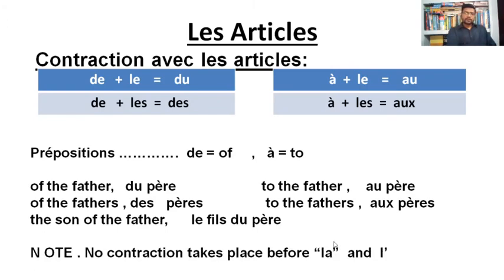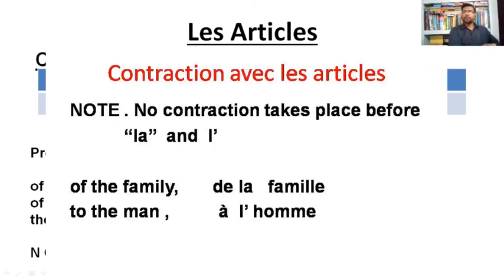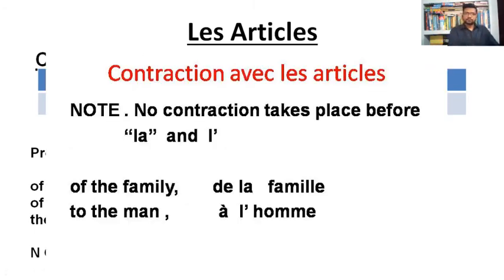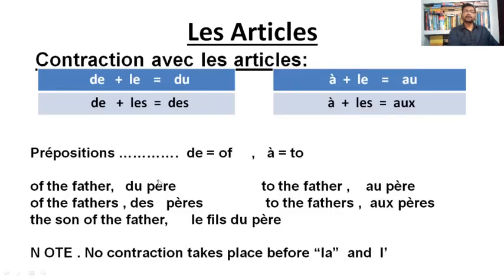Once again — no contraction takes place before 'la' and 'le' when an apostrophe is used. If the noun starts with a vowel — a, e, i, o, u — then the definite article 'le' or 'la' loses its vowel and uses an apostrophe, like 'l'.' But 'père' starts with a consonant, not a vowel, so 'du père' is correct. Fundamentally, this is the basic concept of the contraction of the article.